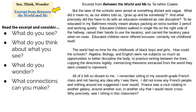If you click on the hyperlink on the left-hand side it'll take you to the excerpt, or you can simply read from your screen here. As we read through this excerpt, we're going to return to our questions: what do we see, what do we think about what we see, what do we wonder, and what connections can we make? Let's read the excerpt together: 'But the laws of the schools were aimed at something distant and vague. What did it mean to, as our elders told us, grow up and be somebody? And what precisely did this have to do with an education rendered as rote discipline? To be educated in my Baltimore mostly meant always packing an extra number two pencil and working quietly. Educated children walked in single file on the right side of the hallway, raised their hands to use the lavatory and carried the lavatory pass. Educated children never offered excuses — certainly not childhood itself. The world had no time for the childhoods of black boys and girls. How could the schools?'